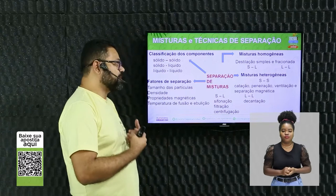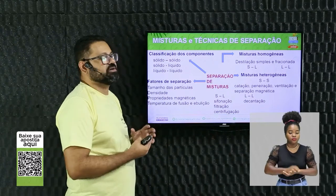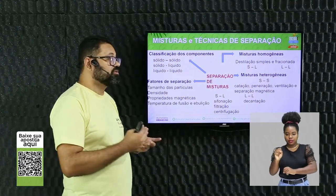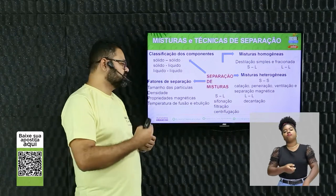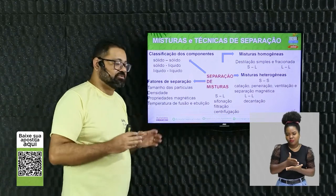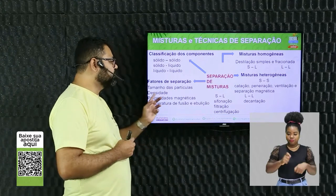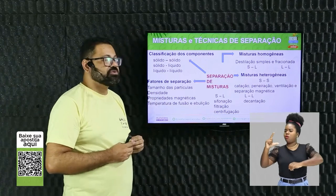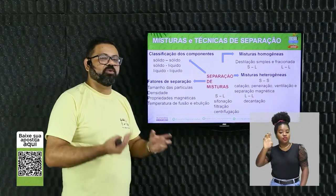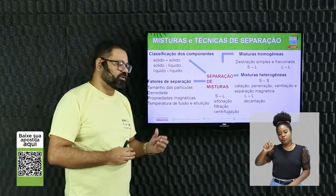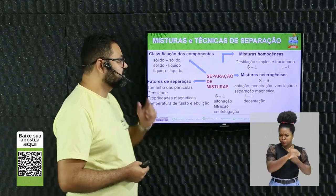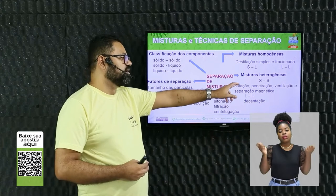Os componentes podem ser sólido, líquido ou gasoso. Posso ter uma mistura sólido-sólido, sólido-líquido ou líquido-líquido. A partir daí, temos o processo de separação de misturas. Existem fatores que devemos observar: tamanho das partículas, densidade, se a substância tem propriedades magnéticas, e as temperaturas de fusão e ebulição das substâncias que participam da mistura. A mistura pode ser homogênea ou heterogênea.